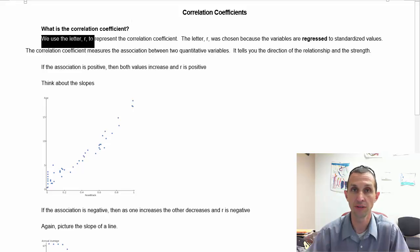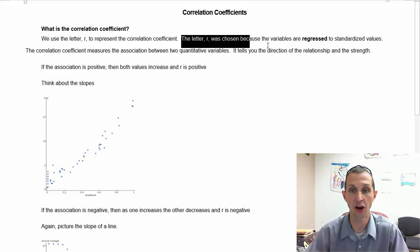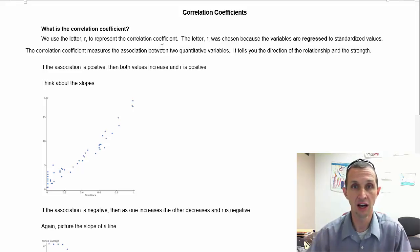We use the letter R to represent the correlation coefficient. That's not just because we ran out of letters when doing math. The letter R was chosen because the variables are regressed to standardized values - basically we make them unitless when you do something with the standard deviation, and that helps us determine what R is.